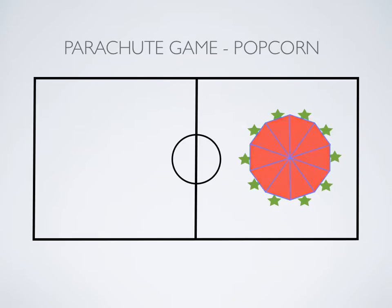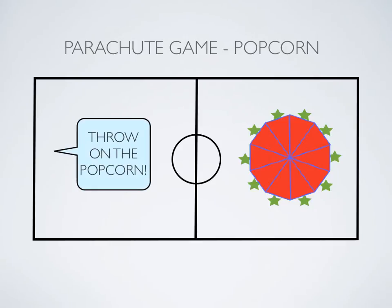Then you'll have them slowly start waving the parachute so that you're turning the heat on, it's getting a little hotter, and as time goes on they speed up. You say, 'Oh it's getting hotter and hotter,' so they start waving it faster and faster until they're going crazy waving it. It'll be bubbling up and you'll say, 'Here comes the popcorn!' and then you throw on the popcorn — use dodge balls or whatever — and they'll start bouncing and flying all over the place.